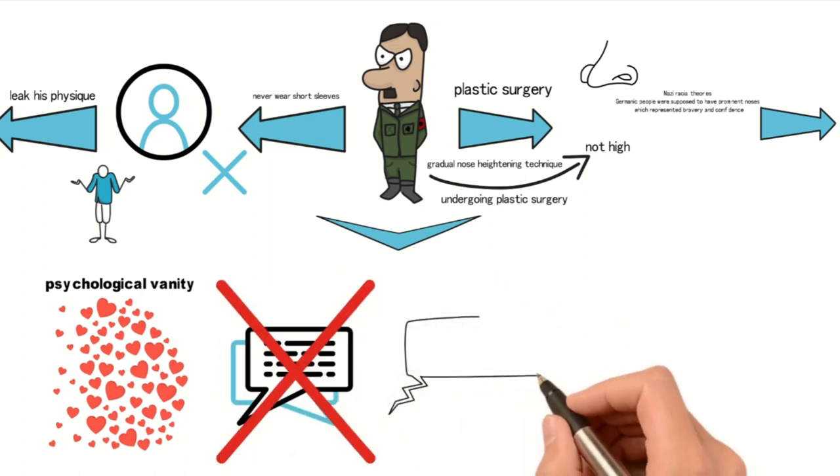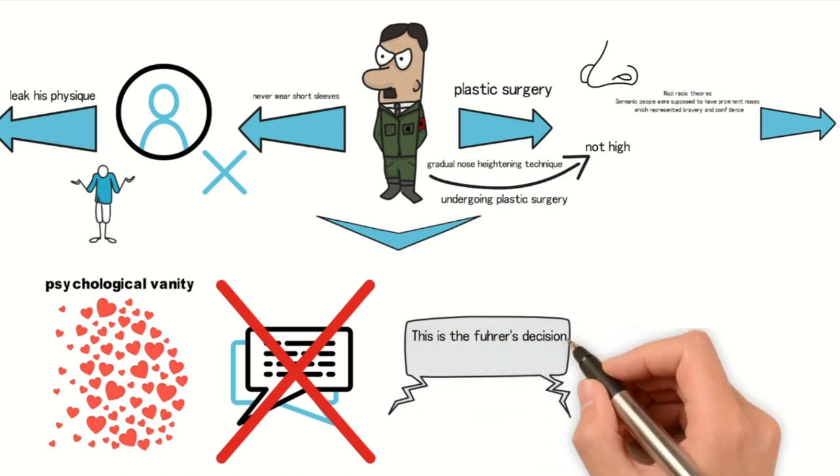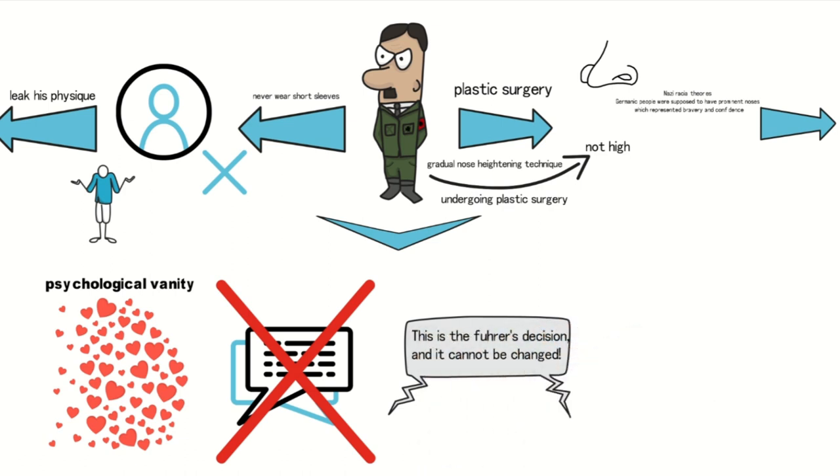Throughout the war, German generals often received orders like, this is the Führer's decision, and it cannot be changed, even if it was wrong.